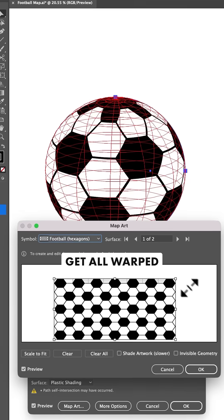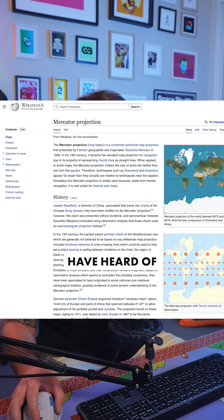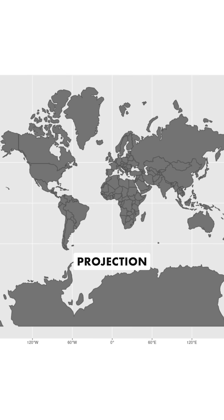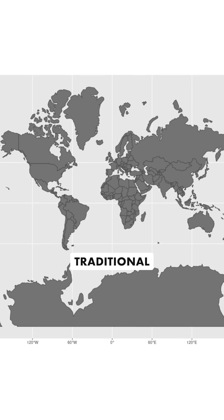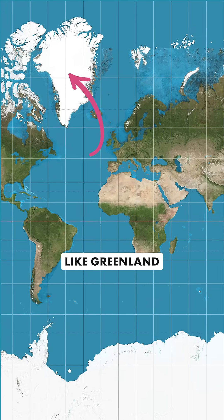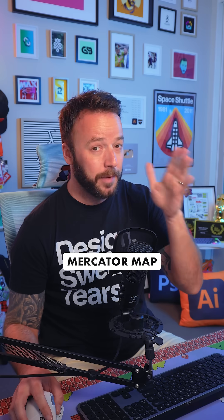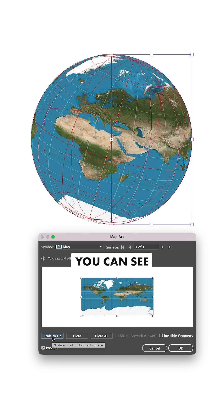The top and bottom of the ball get all warped, and that's because you need to compensate for this with a Mercator projection. You might have heard of that before because it's the projection used on world maps. The Mercator projection inflates the size of land the further away it is from the equator — so on traditional flat maps of Earth, places like Greenland appear way larger than they actually are. If you throw a Mercator map into a symbol in Illustrator, you can see this working.